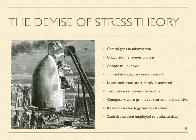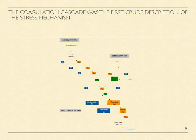Stress researchers focused inordinate attention on the relationships of HPA-axis hormones, immune activity, and stress, but the nature of these relationships remained unclear. Meanwhile, they came closer to success than they realized when they described the coagulation cascade in the early 1960s. Many suspected its role in tissue repair, but essential information remained lacking. In retrospect, the coagulation cascade can be recognized as the first crude description of the mammalian stress mechanism.